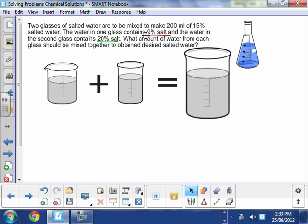And what I want is 200 milliliters of 15% salted water. So what I'm going to try to do is mix these two containers together so that I will get 200 milliliters of 15% salted water.